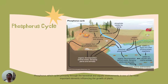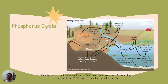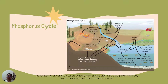Phosphorus, which cycles primarily through the terrestrial and aquatic environment, is one of the most important elements influencing growth of plants. It is a chemical element found on earth in numerous compound forms such as phosphate ion located in water, soil, and sediments. The quantities of phosphorus in soil are generally small and this often limits plant growth, which is why people often apply phosphate fertilizers on farmlands.